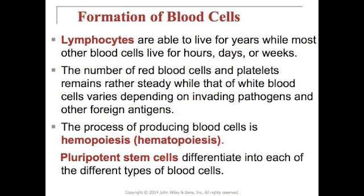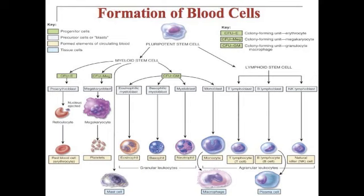Figure 19.3 on page 702 provides a map of blood cell formation. At the top is the pluripotent stem cell, which differentiates into the myeloid stem cell or the lymphoid stem cell. The myeloid stem cell gives rise to red blood cells, platelets, mast cells, eosinophils, basophils, neutrophils, and monocytes.